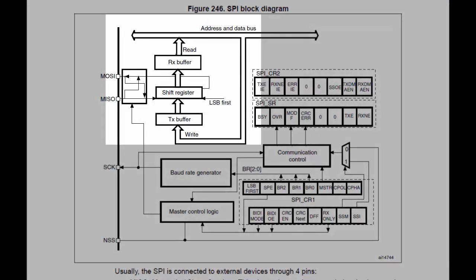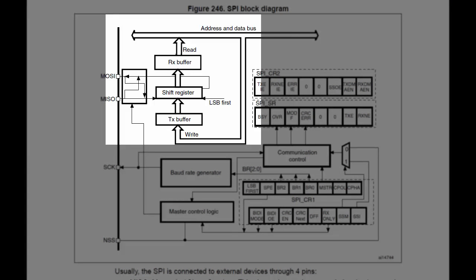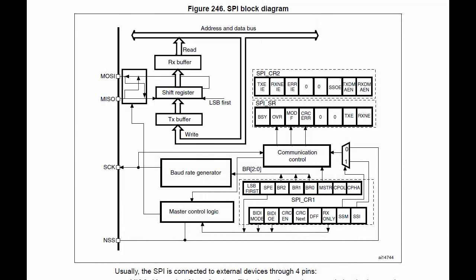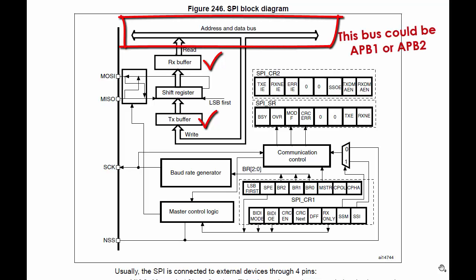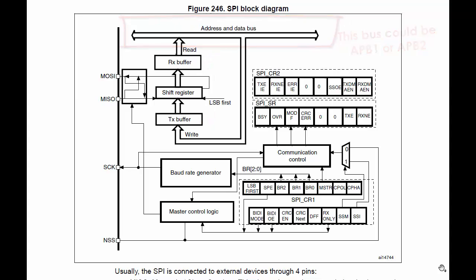The heart of the block diagram is a shift register associated with two buffers: one is a TX buffer and another is an RX buffer. Since SPI is a full-duplex communication protocol, having two buffers is a must. You can see that both TX and RX buffers are accessible over the bus, which is APB1 or APB2.